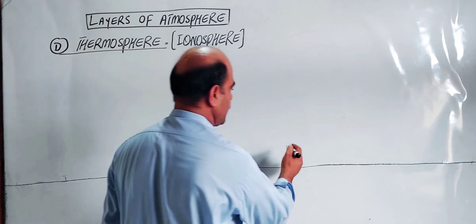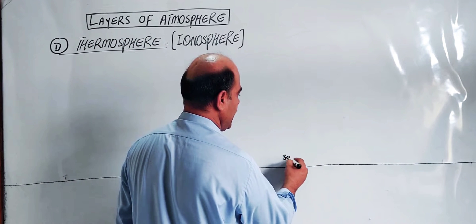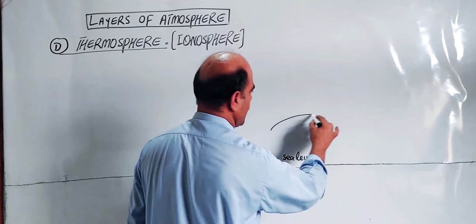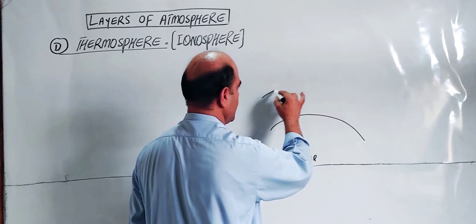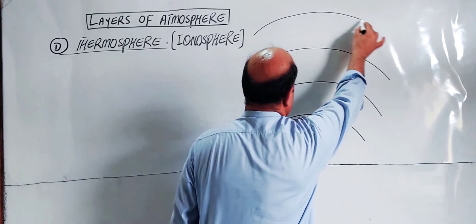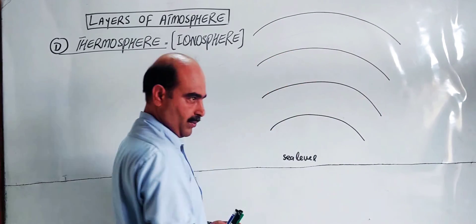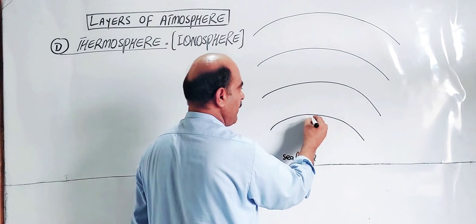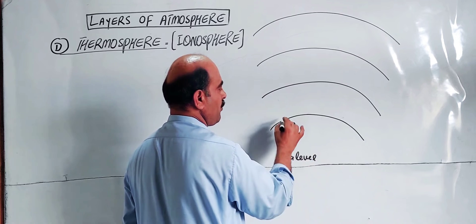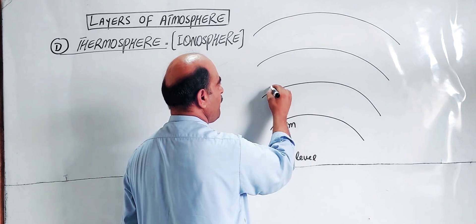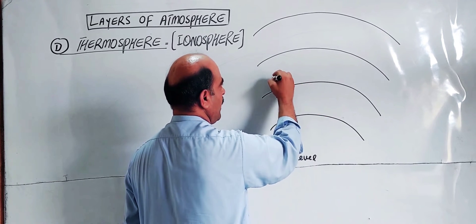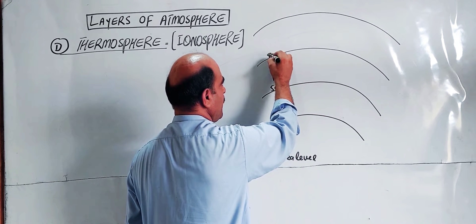The scientists divide the atmosphere from sea level. The first region, up to 11 kilometers, is the troposphere. Up to 50 kilometers is the stratosphere. Up to 85 kilometers is the mesosphere.